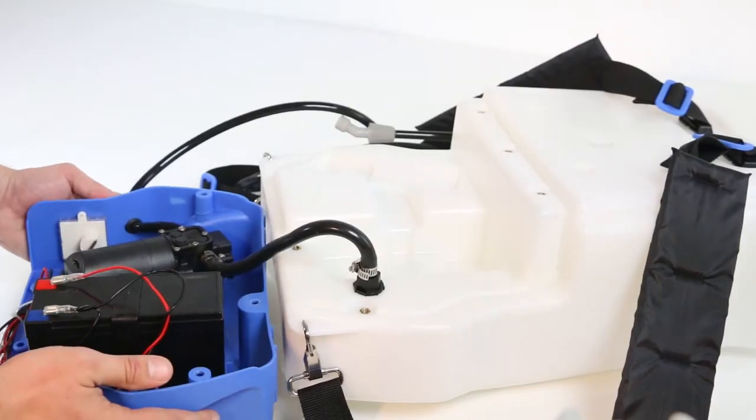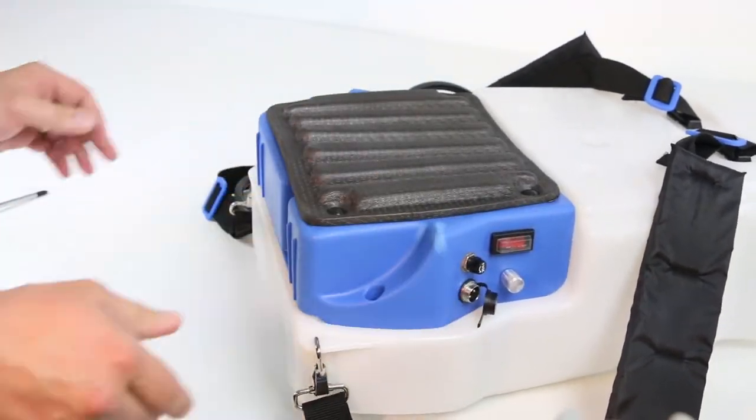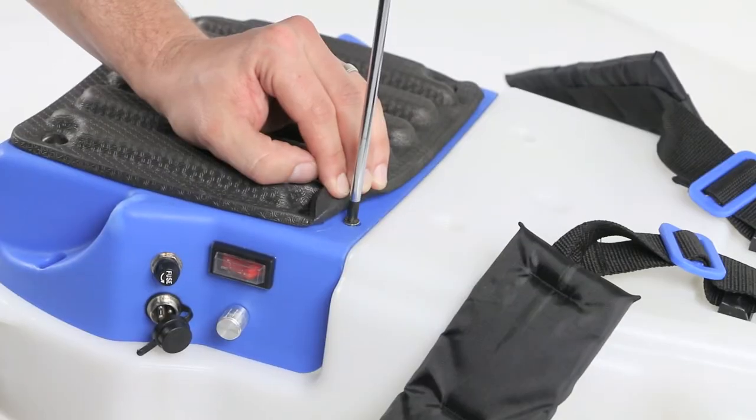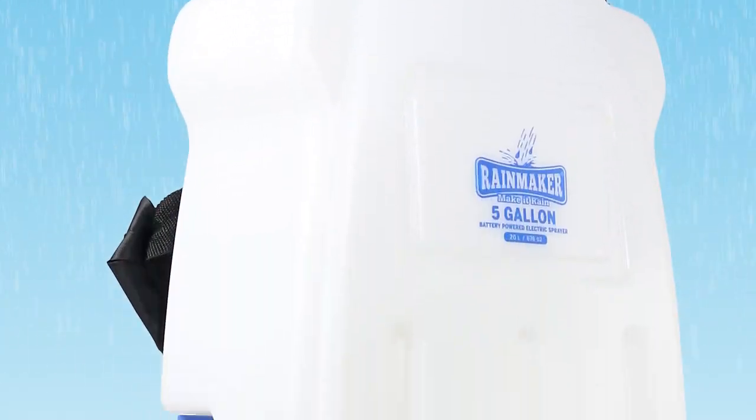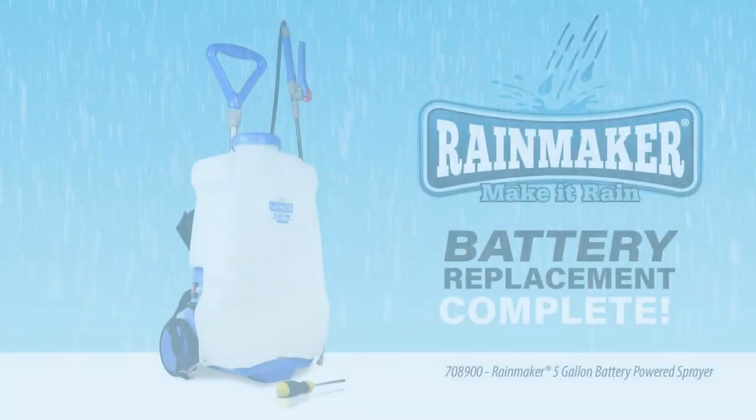We ask you to do your part and properly recycle your old battery. There are links in the description to find your closest recycling center. After reassembly, your Rainmaker 5-gallon battery-powered sprayer is ready to go.